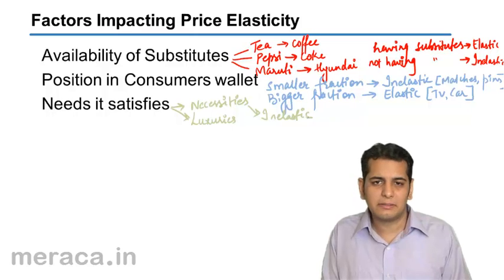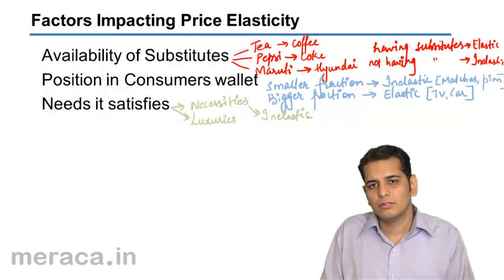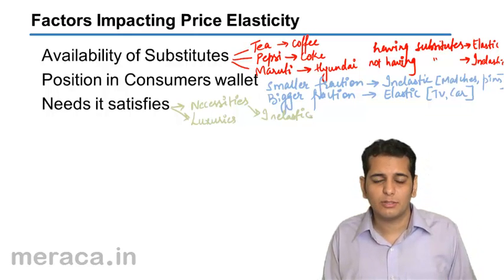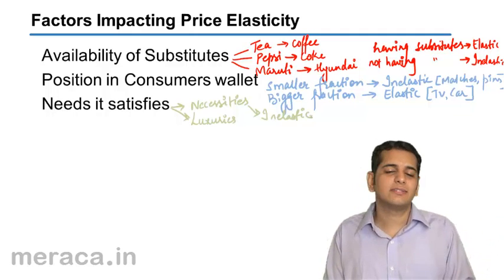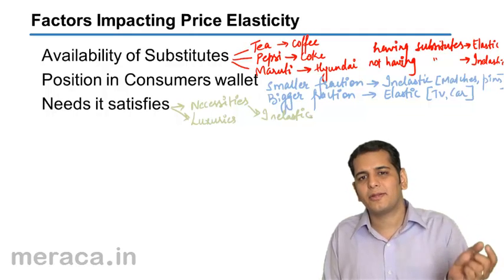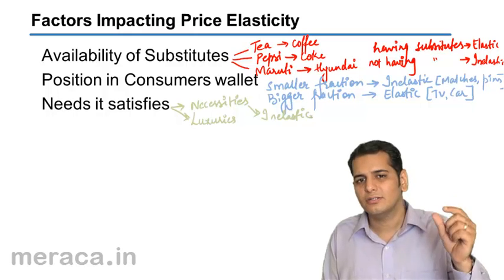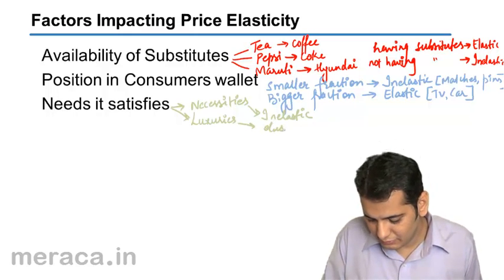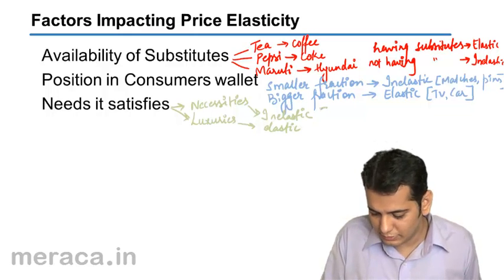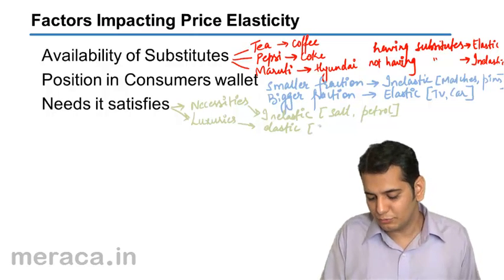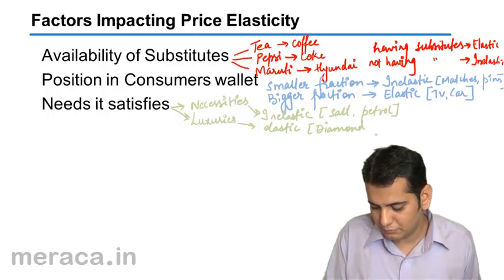But take luxuries for example — ACs, TVs, diamond rings. Whenever the prices rise, we tend to consume more of such goods because this is an exception to the law of demand. A change in price is bringing about a change in the quantity demanded. So, we can say the demand for luxuries is always elastic. The examples of necessities would be salt and petrol. The examples of luxuries would be diamond and AC.